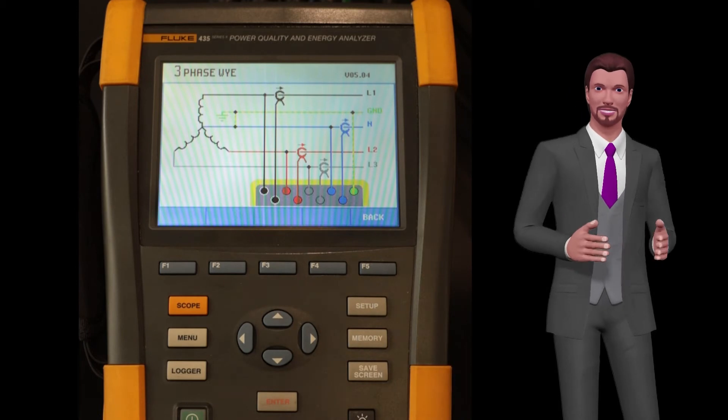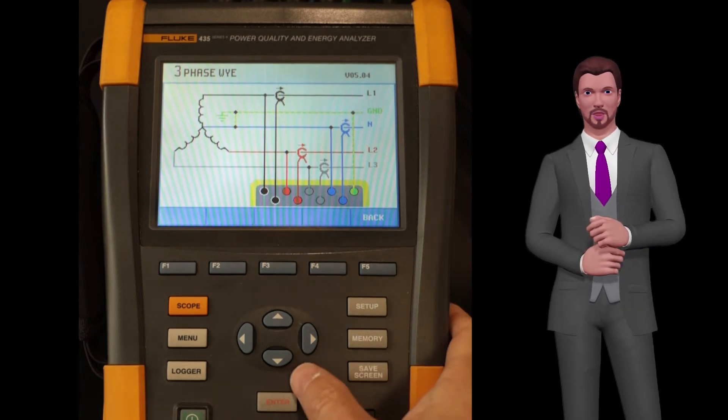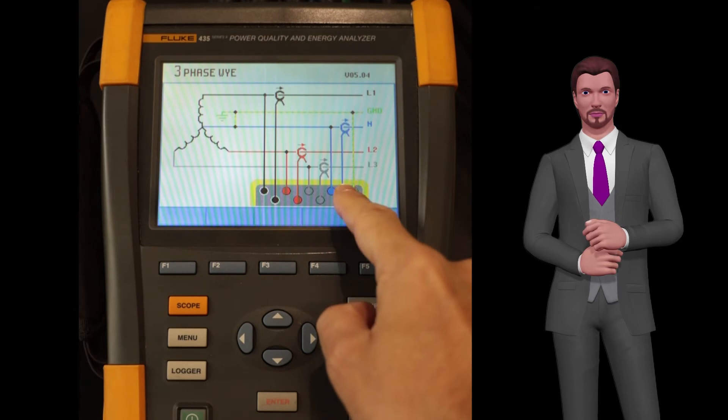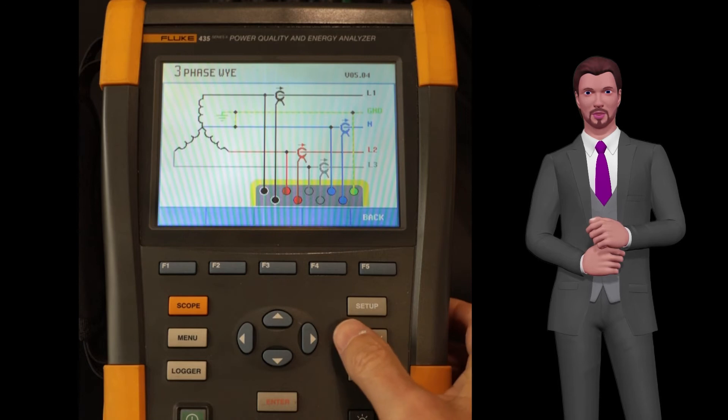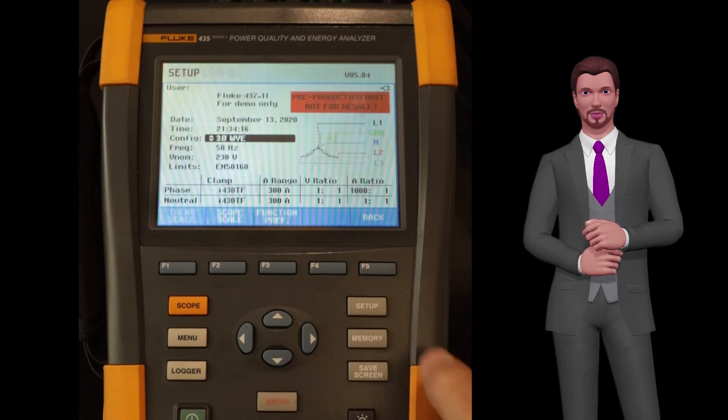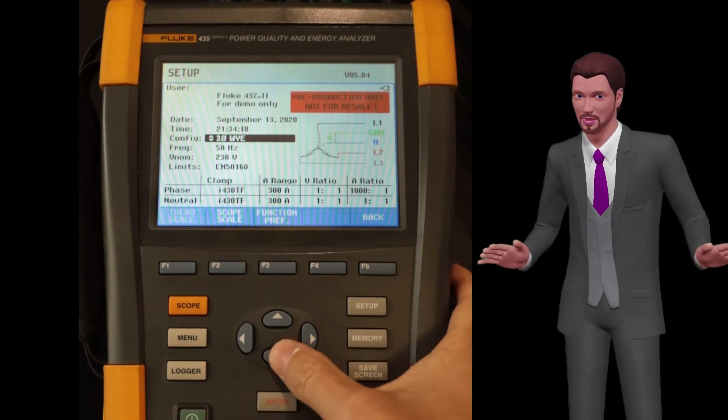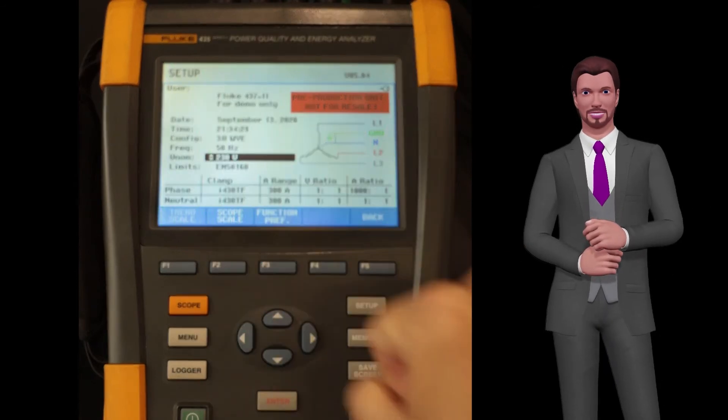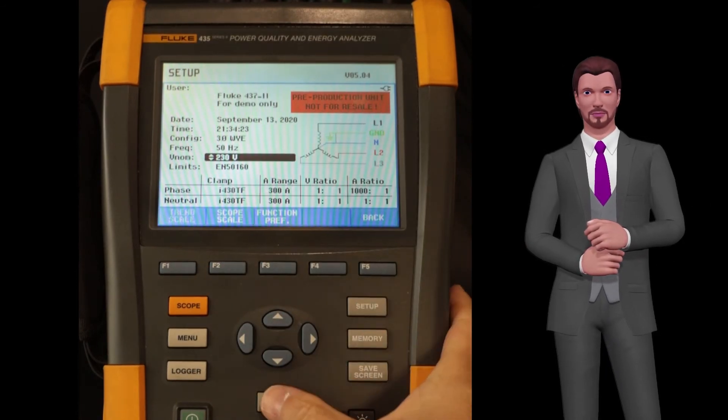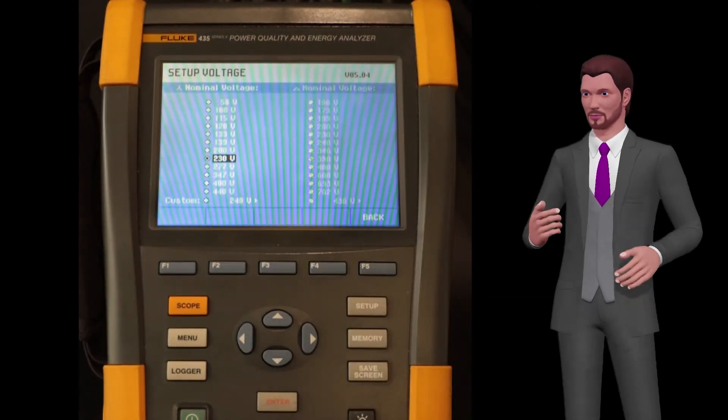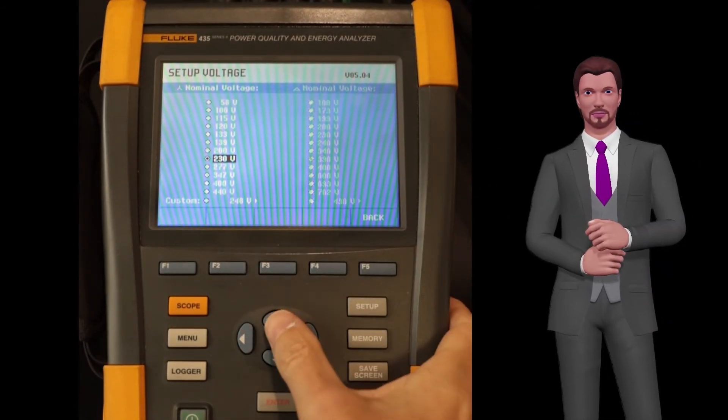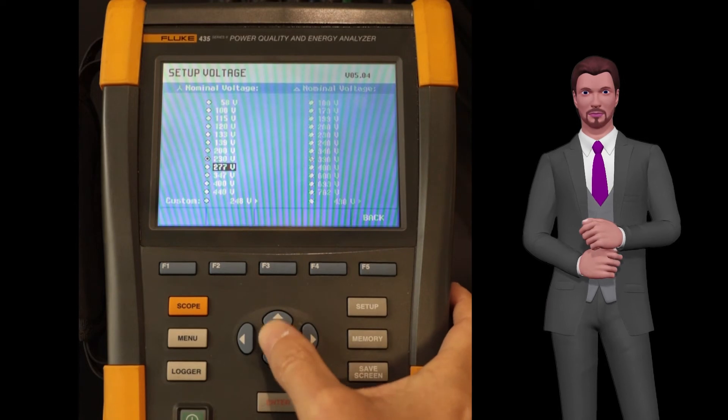Now we see that we have to install the neutral current probe, which was not the case in the delta system. We press the F5 back key twice. As we can see the nominal voltage has changed. It is no longer 398 volts and if we press the enter key on that value, we will see that now the value of 230 volts has been selected in the left column. This is normal, as in a star system the nominal voltage is taken between phase and neutral, not between phase and phase.